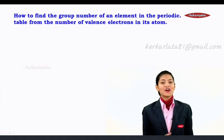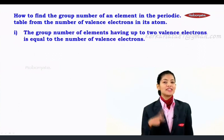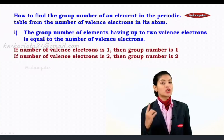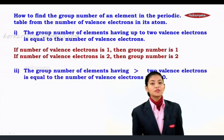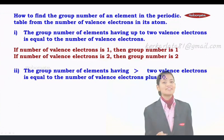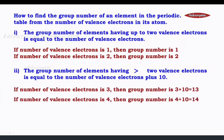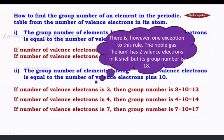Let us now understand some board questions. The first question: how do you find the group number of an element from the number of valence electrons? If the number of valence electrons is 1, the group number is 1. If the number of valence electrons is 2, the group number is 2. But for elements with 3 or more valence electrons, the group number equals the number of valence electrons plus 10. For example, 3 valence electrons gives group 13; 4 gives group 14; 7 gives group 17.